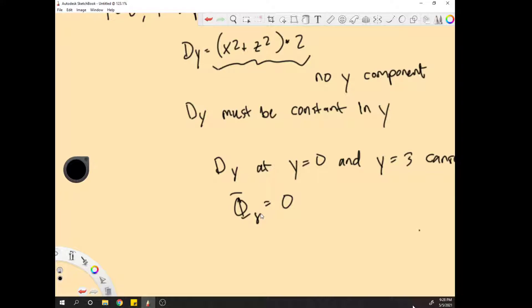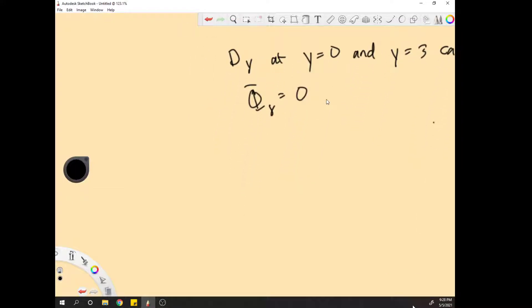That's the x equals two plane and z equals five plane. Those are the only two left on our parallelepiped, whatever the hell you call it.